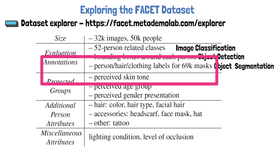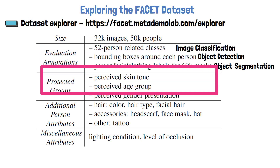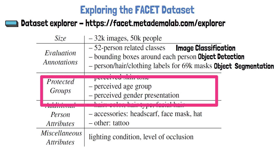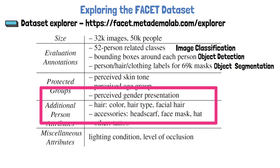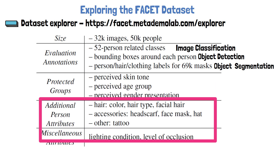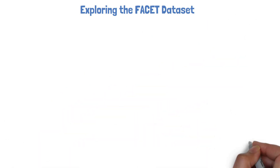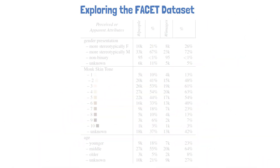As we saw in the two image examples, there are also annotations for skin tone, age group, and gender, which can be used to check disparity for certain protected groups. There are also various more attributes, such as hair details, face masks, tattoo, and lighting.